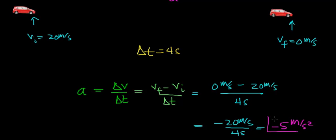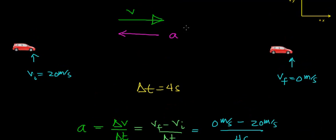So this car's velocity is going to change by negative 5 meters per second every single second. The acceleration is negative 5 meters per second squared — notice the negative sign indicating that it's in the opposite direction of the velocity vector.